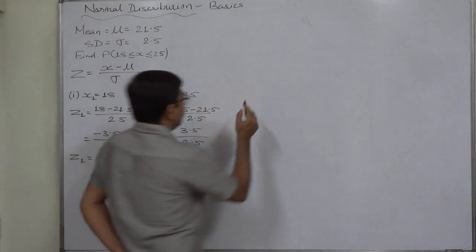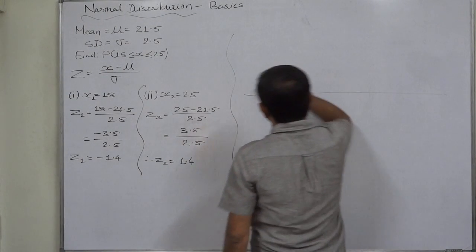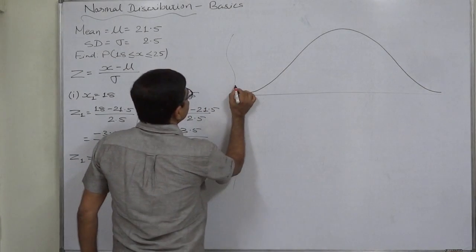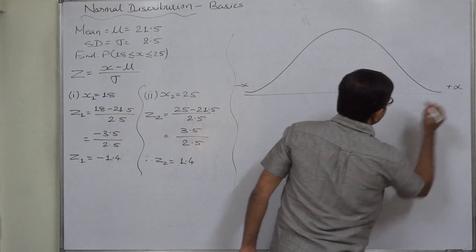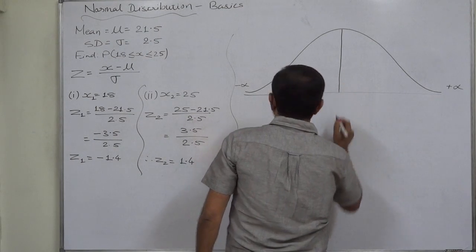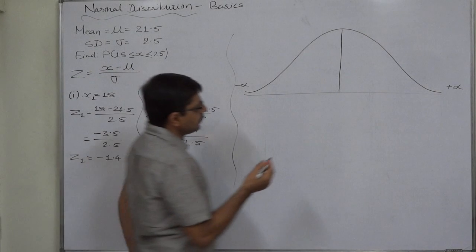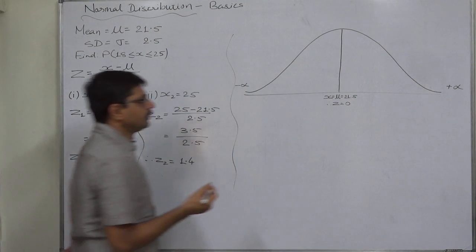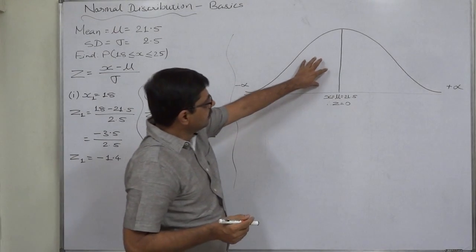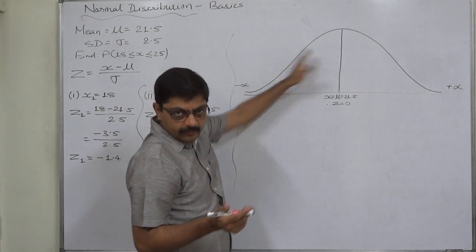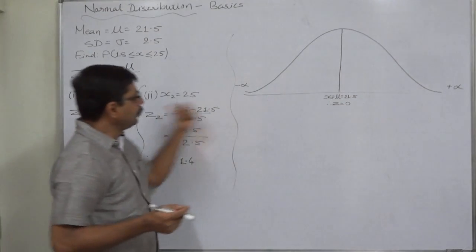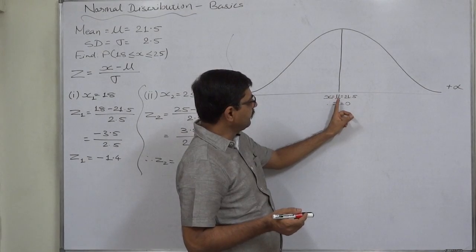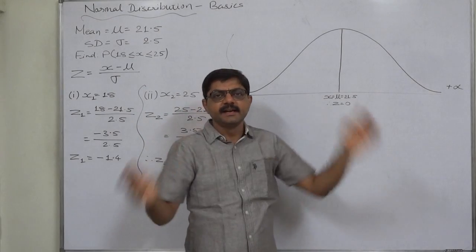The scale of the normal probability curve is always from negative infinity to positive infinity. The mean falls exactly in the middle, where z = 0. The left-hand side area from x = mean to x = −∞ is 0.5, and similarly the right-hand side area from mean to +∞ is also 0.5. This area itself represents probability.